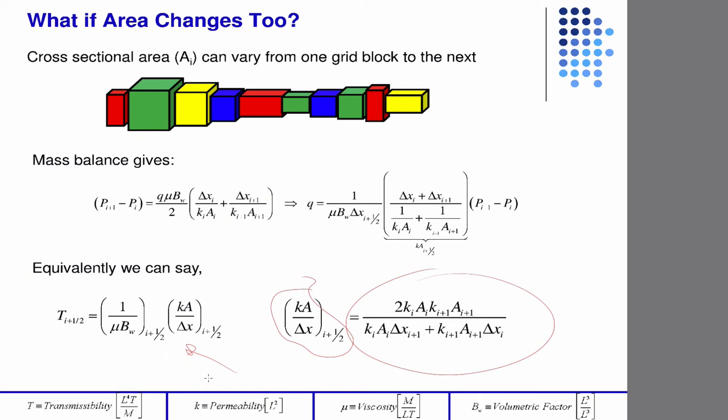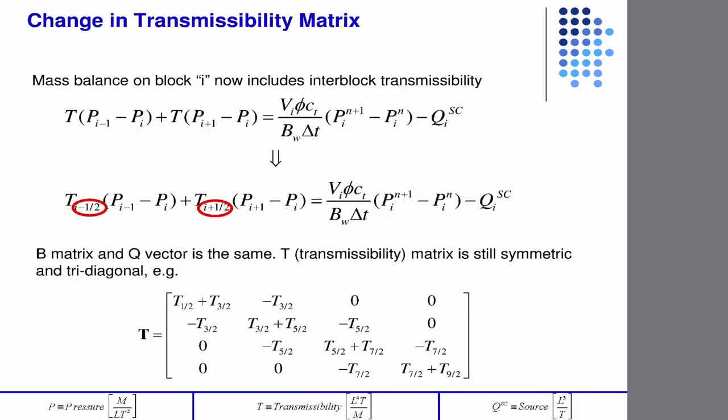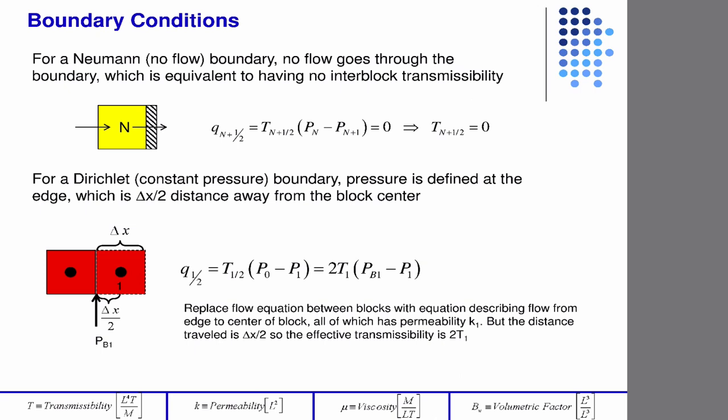And the fluid properties can vary block to block. So this would be like if you had variable viscosity and other stuff. And we're not going to talk about this today, because we're going to discuss more about it later when we talk about multi-phase flow. This was just the transmissibility matrix. This is a discussion on boundary conditions that I went over.